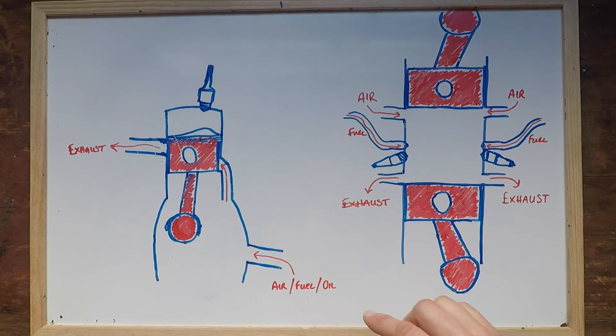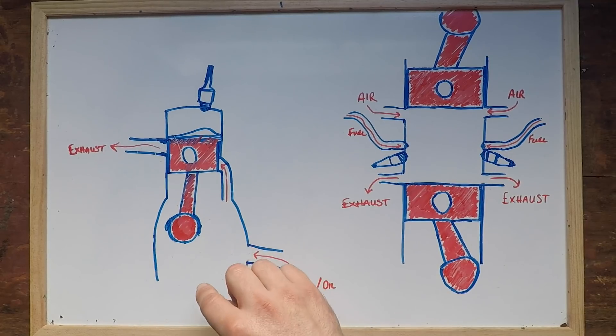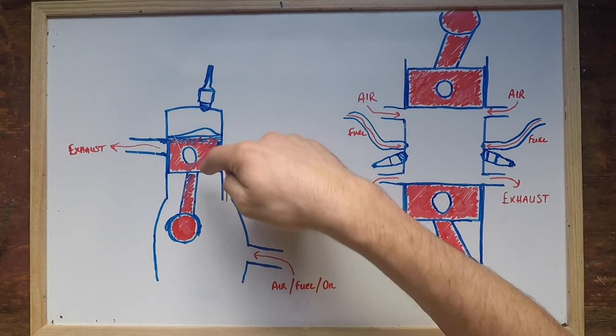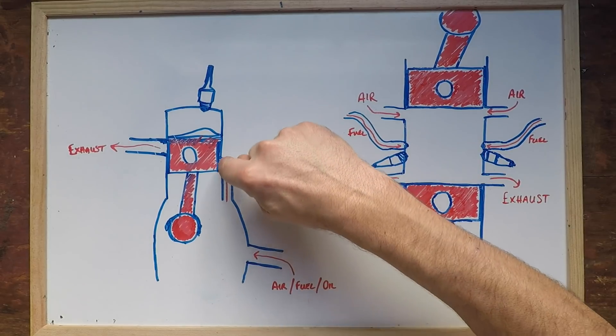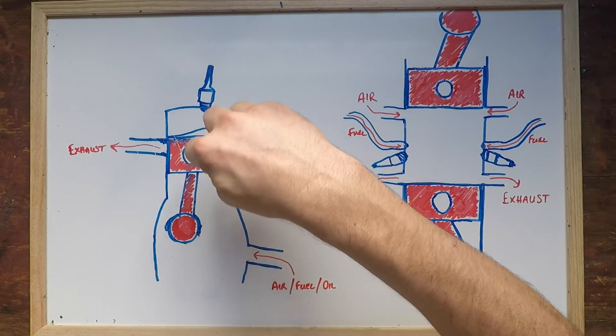Because it's in the crankcase, we now need to add two-stroke oil into the fuel to lubricate things like the bearings and the crankshaft itself. That mixture moves up through a transfer port as the piston comes down, it opens this port and allows that mixture into the combustion chamber.